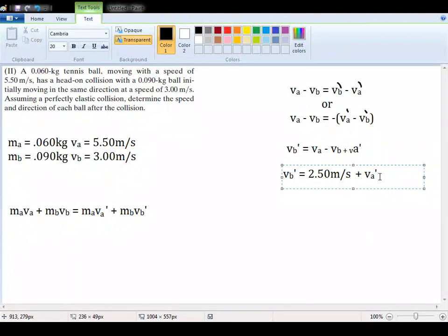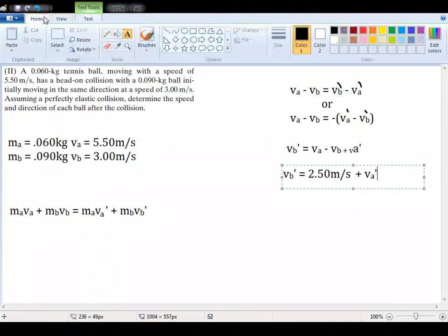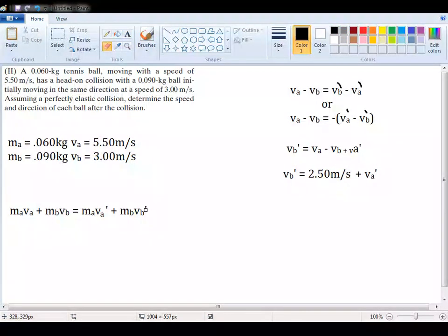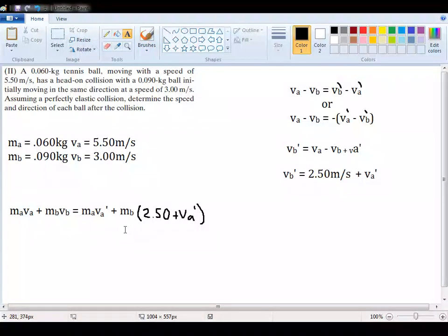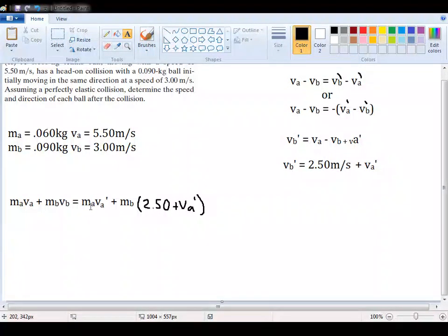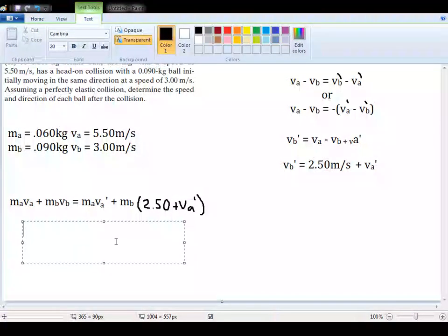And this is all we need to sub in for the VB prime right here. So I'm going to write that in, that now it's 2.5 plus VA prime multiplied by the MB. Now that we have this, now we can solve for VA prime. So now we have two of these, so now algebraically, we can rewrite it.